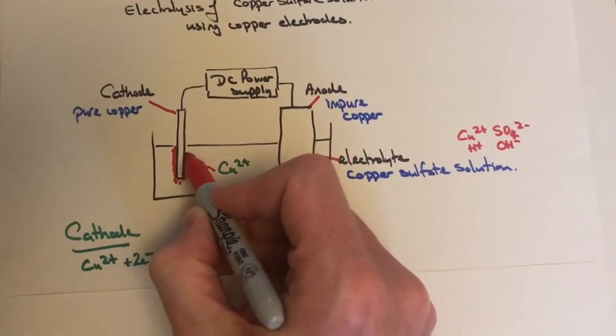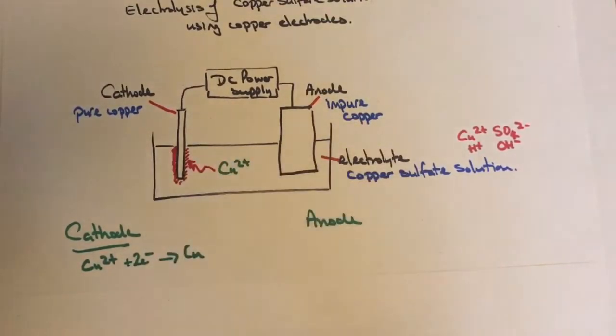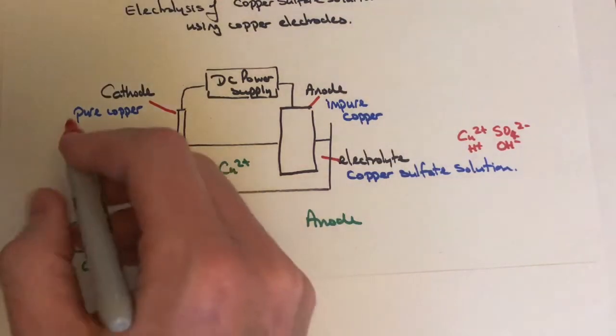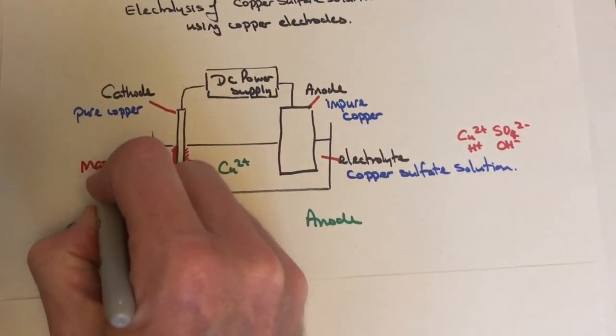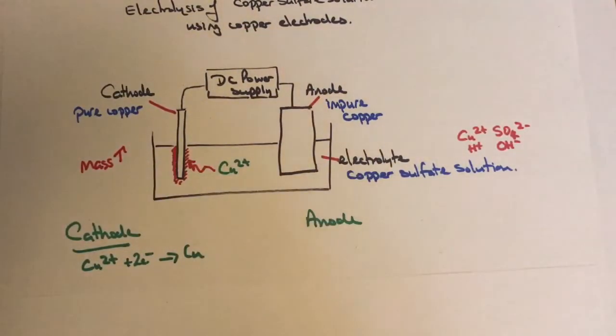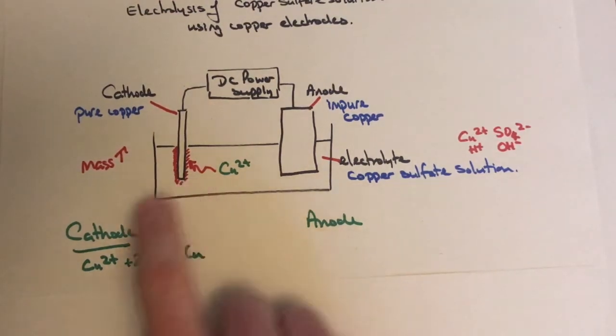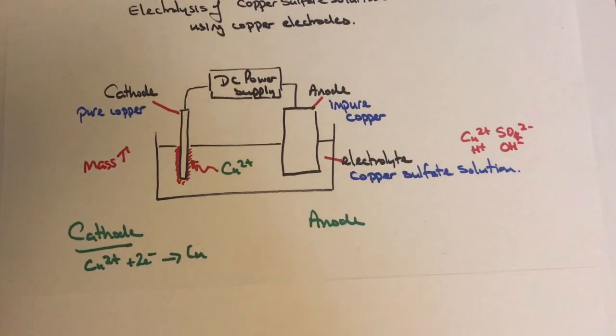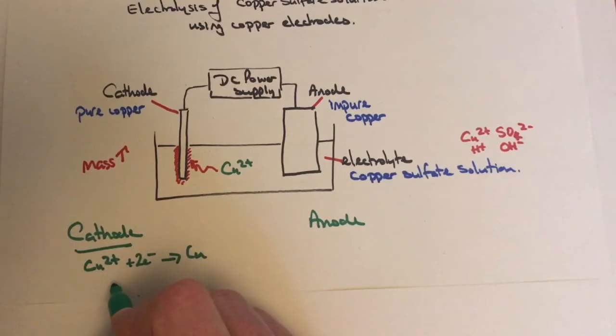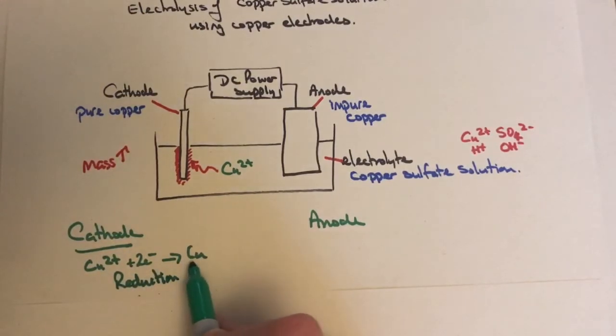This electrode will increase in mass. If you weigh it at the beginning and after electrolysis has occurred, the mass increases as new copper is added. This reaction involves gaining electrons—that's reduction. Remember, oxidation is loss, reduction is gaining. The electrode gets thicker.